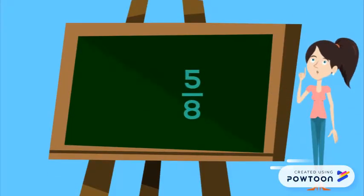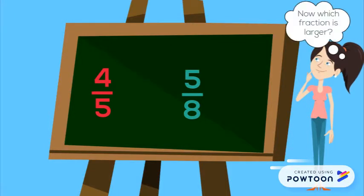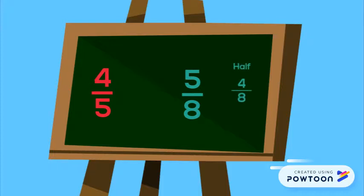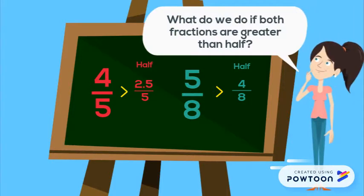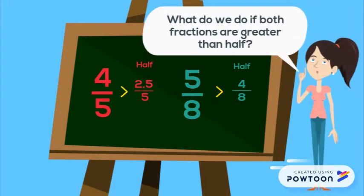What if we change the first fraction to 4/5? How do we know which one is larger? We know that 5/8 is just over half, and we also know that 4/5 is greater than half because it is more than 2.5/5. If they are both over half, how do we know which fraction is larger?